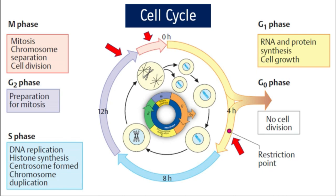In rapidly dividing cells of the human embryo, G1 phase can be as short as a few hours. In contrast, brain cells become arrested in G0 phase with no further cell division. In that case, G1 is arrested into G0, which becomes essentially a lifelong phase for non-dividing cells such as neuronal cells.